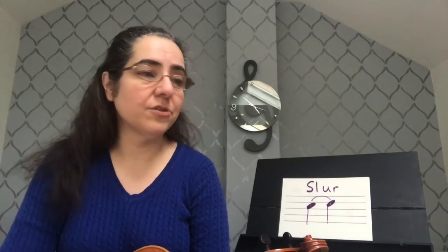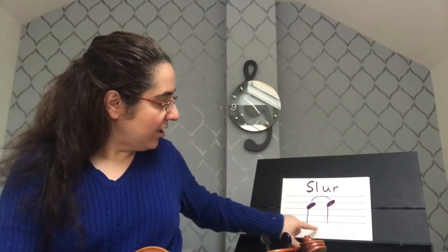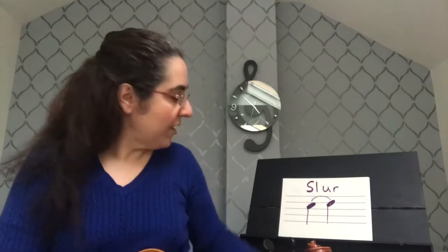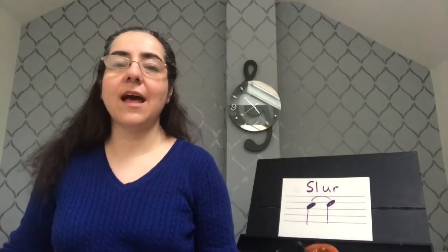Slurred notes are when you have two or more different notes — notes of different pitches — connected by a curvy line. In this example, I'm going to use viola notes. I have a D slurred to an E. In string playing, you play slurred notes in the same bow stroke. I would play these two notes in one bow. Here's what that would look like.